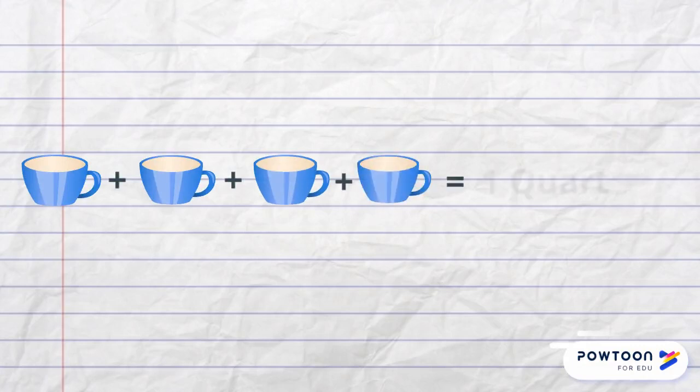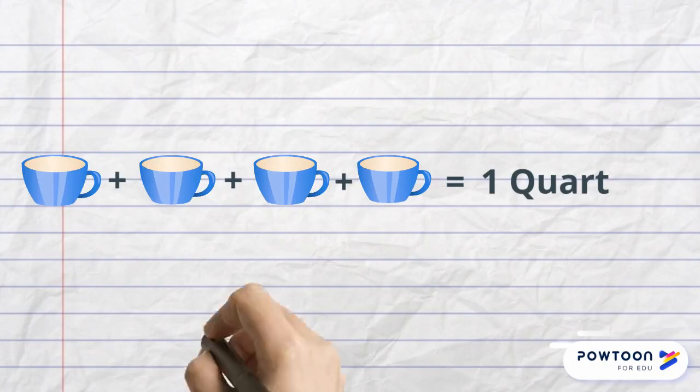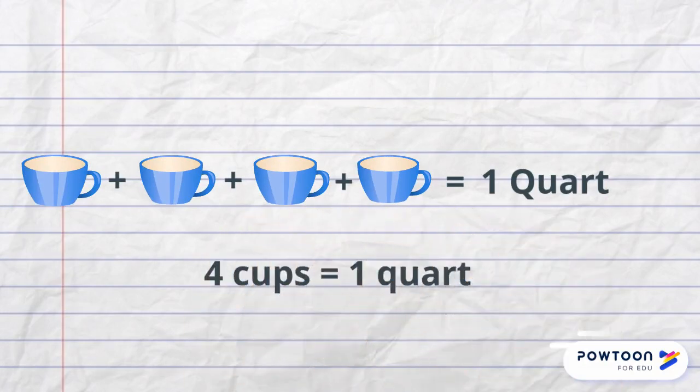Did you know that there are four cups in a quart? It's true. You can use a one-cup measuring cup and measure a quart of liquid by filling the cup four times. We can also say that four cups is equivalent to one quart.